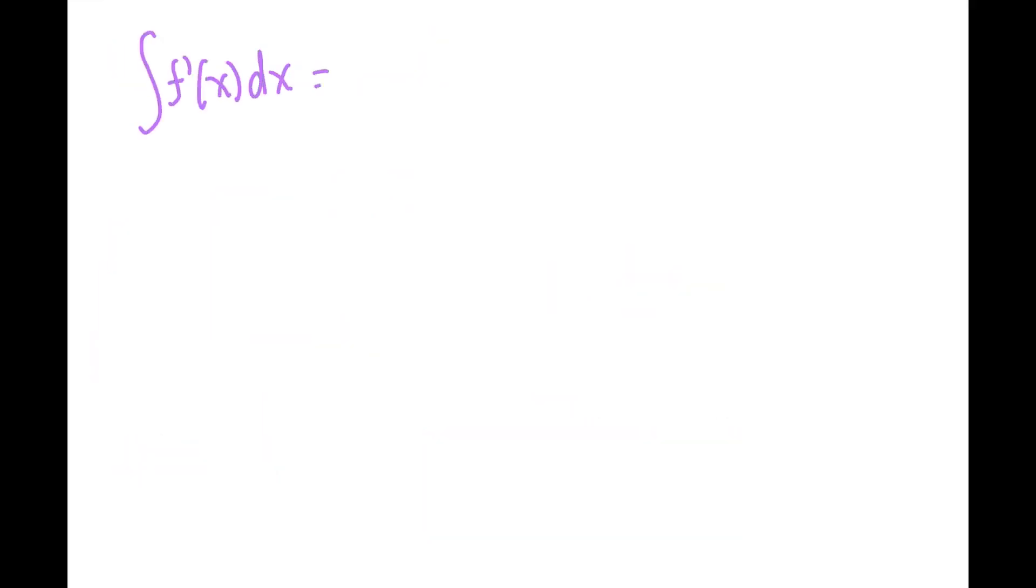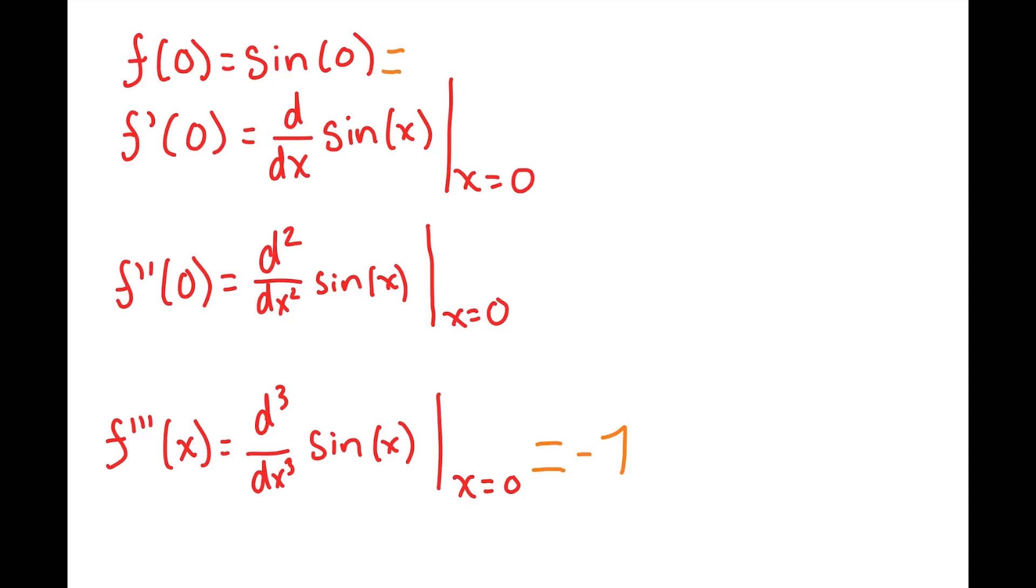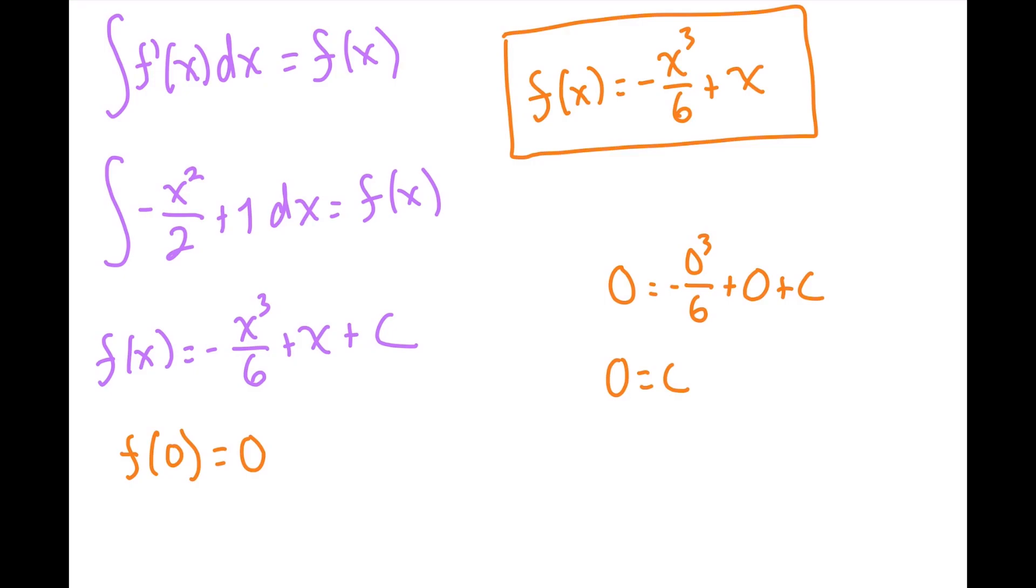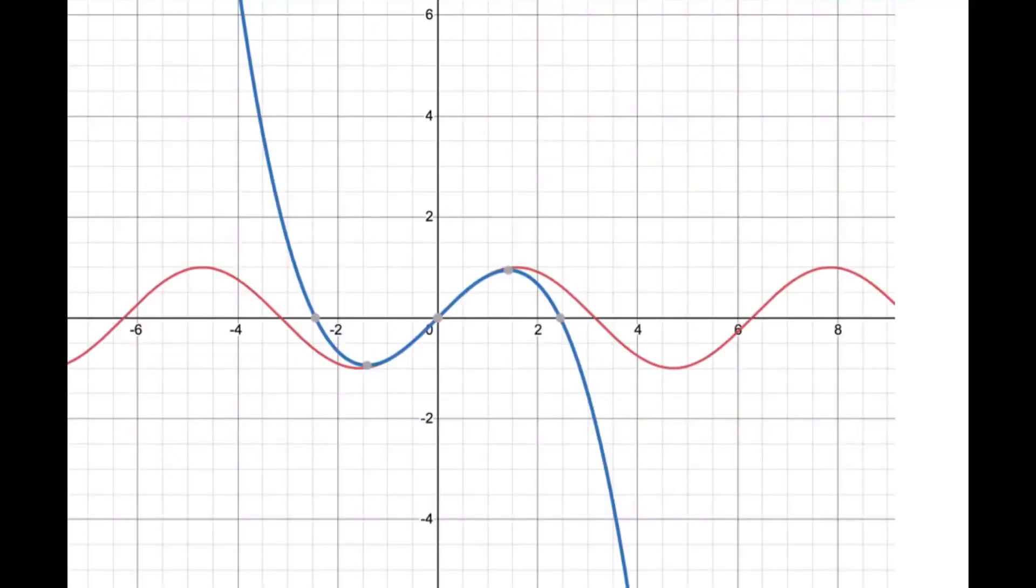Let's take the integral of that. f of x is then going to be negative x cubed over 6 plus x plus c. Plug in 0 for x and sine of 0 for f of 0, and we get c equals 0. So our final equation for f of x is negative x cubed over 6 plus x. Let's plot this on top of sine. Wow, it traces over it. Of course, as we get further away from our anchor point, x equals 0, our approximator gets less accurate.